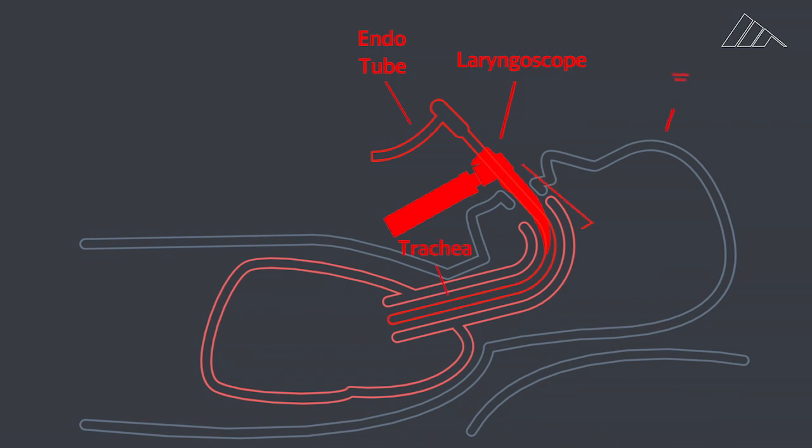The tube is secured with a fastening device and verified that it's in place and won't be dislodged with bilateral breath sounds and an x-ray. A balloon is also inflated around the tube to make sure it stays in place.